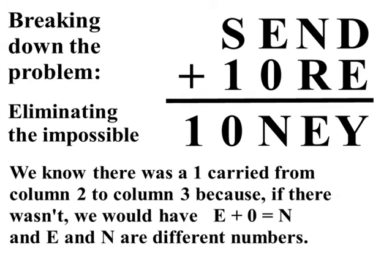Fortunately, we do know that there was carrying from column 2 to column 3. Remember, column 2 is the one that has N plus R equals E or adds up to E possibly plus something. And column 3 is the one that has E on the top. So, we know there was carrying in that column because if there wasn't that would give us E plus 0 equals E.